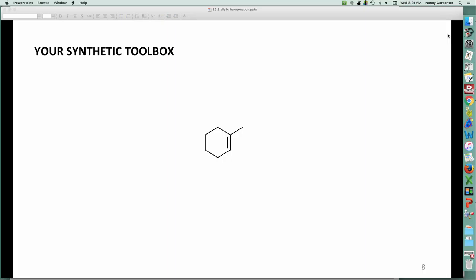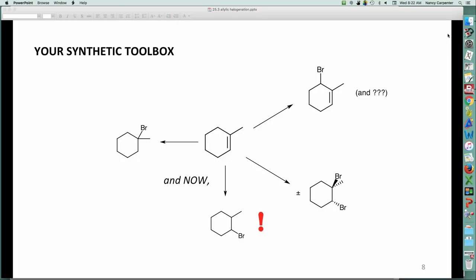Alrighty, so this chapter has now really expanded your synthetic toolbox. So, we start out with an unsymmetrical alkene like methylcyclohexene. We now know how to remove, pluck off, one of those allylic hydrogens and replace it with a bromine. Super handy. We now know, well, we have always known, or at least since chapter 11, how to add bromine across a double bond by an electrophilic addition reaction. We've known for a long time how to put a bromine on the most substituted carbon. That's just plain old electrophilic addition. And we're about to learn, very cool, how to do the anti-Markovnikov addition of HBr across a double bond.